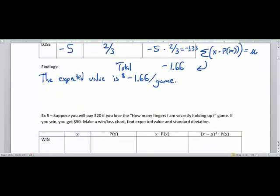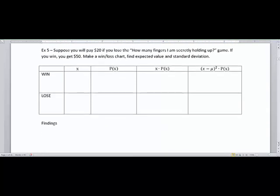So let's take a look at this bet. Suppose you will pay $20 if you lose the how-many-fingers-am-I-secretly-holding-up game. So losing $20 if somebody holds their hands behind their back and holds up a certain number of fingers, and then has you try to guess. Now the probability is pretty easy if you just think about, they could hold up one finger through 10. We're not going to include the fact that they could hold up zero.